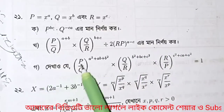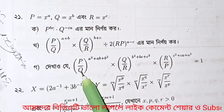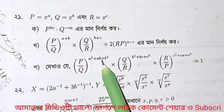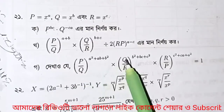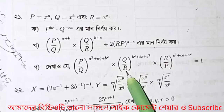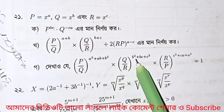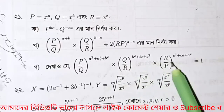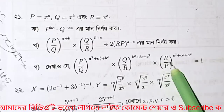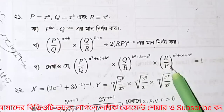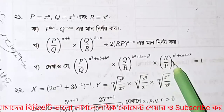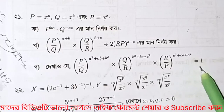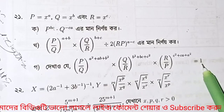Question number D: Show that P by Q to the power A squared plus AB plus B squared, into Q by R to the power B squared plus BC plus C squared, into R by P to the power C squared plus CA plus A squared equals 1.